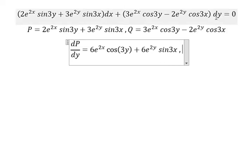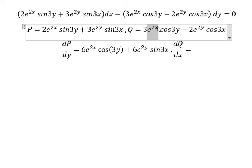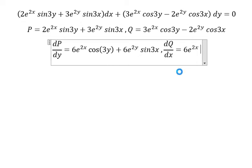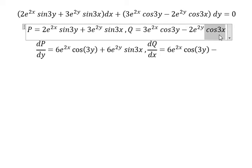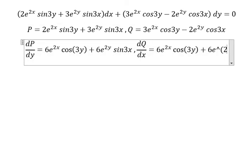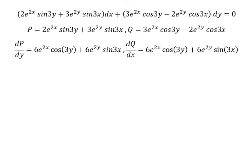Now we have dy. That means we do the first derivative of q with respect to x. So this one we have 2e to the power of 2x, number 2 and number 3, we have number 6. So the first derivative of cos(3x) is about negative number 3, sin(3x). Negative number 3 and negative number 2, we have number 6.